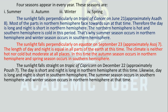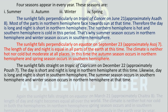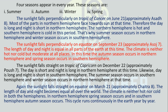The sunlight falls straight on the Tropic of Capricorn on approximately December 22. The day is short and night is long in the Northern Hemisphere at this time, while the day is long and night is short in the Southern Hemisphere. Summer season occurs in the Southern Hemisphere and winter season in the Northern Hemisphere. Again, the sunlight falls straight on the equator on approximately March 21, and the length of day and night becomes equal all over the world. The climate is neither hot nor cold in both hemispheres. Spring season occurs in the Northern Hemisphere and autumn season in the Southern Hemisphere. This cycle runs continuously on Earth.